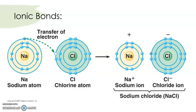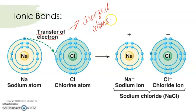In ionic bonds, you have a transfer of electrons, and what that does is lead to charged atoms. So they are no longer considered atoms — they're considered ions. Remember from our last episode, ions are charged atoms. So if we take this example here, sodium has this one little electron just hanging out in the valence shell.